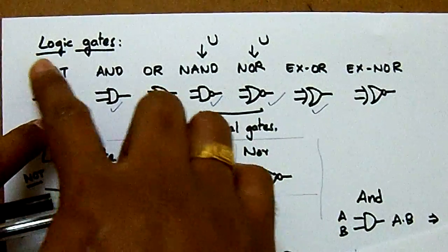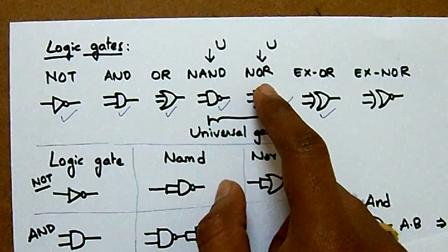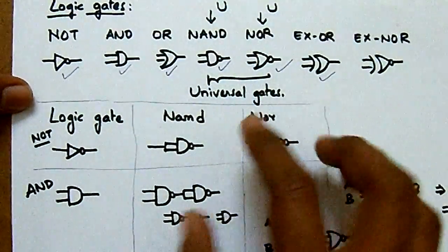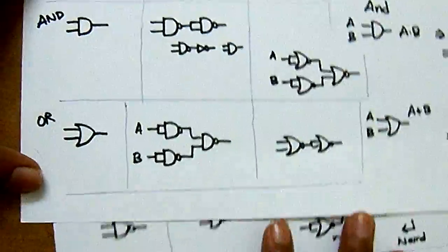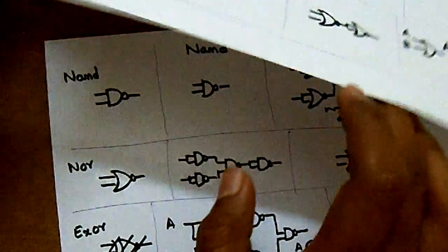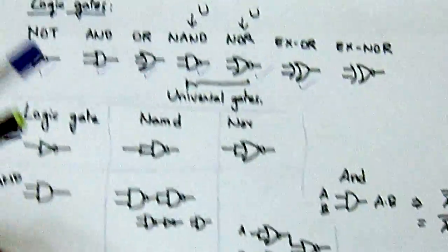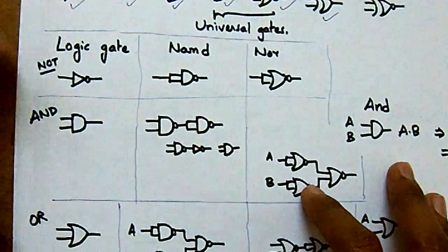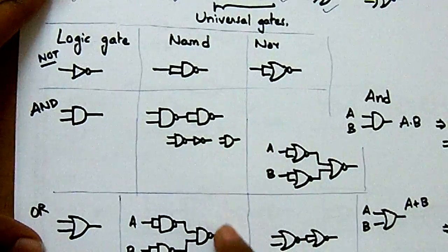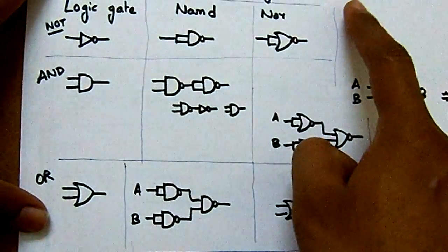These are the basic logic gates, out of which NAND gate and NOR gate are called universal gates. Why? Because we can represent all logic gates — AND, OR, NOR, NAND, XOR, XNOR — in terms of these two gates. We have represented all the logic gates in terms of NAND gates, and also all of them in terms of NOR gates.